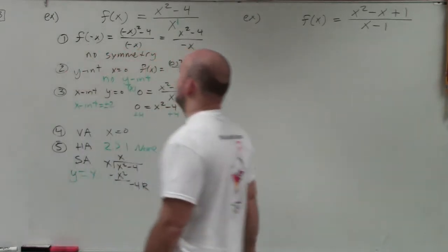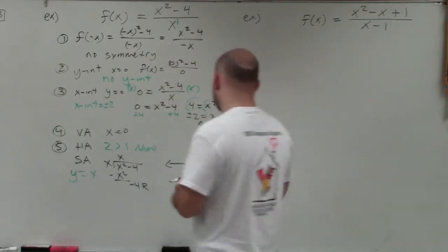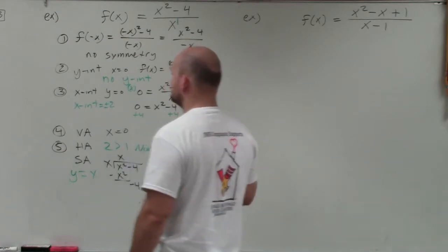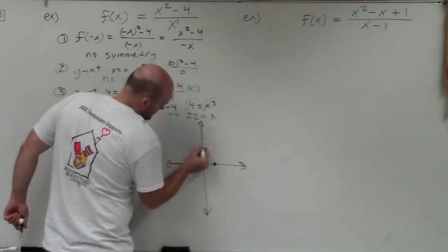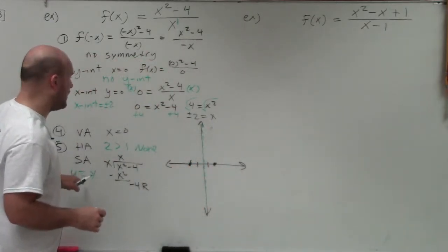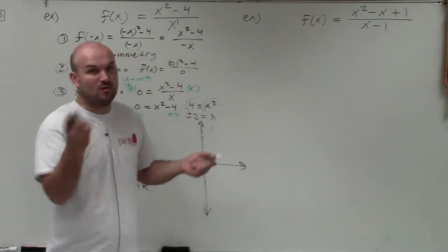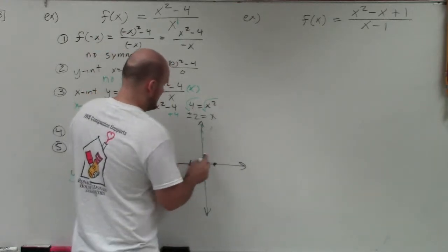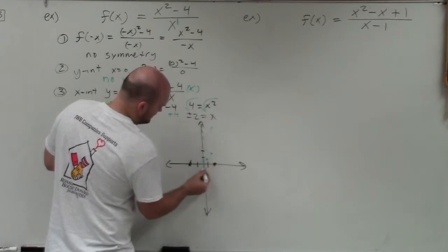Let's plot the information we have. We do not have a y-intercept. The x-intercepts are at positive 2 and negative 2. We have a vertical asymptote at x equals 0, and a slant asymptote at y equals x. Remember, y equals x is the identity graph — whatever x equals, y equals. So x equals 1, y equals 1; x equals 2, y equals 2. That graph is a straight diagonal line.